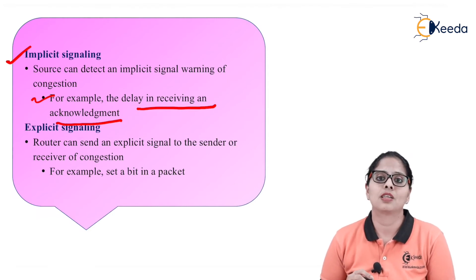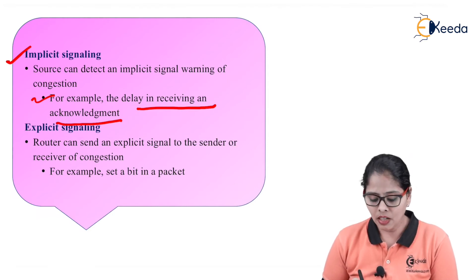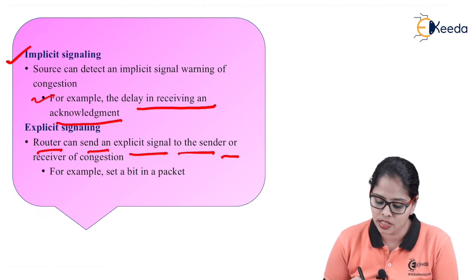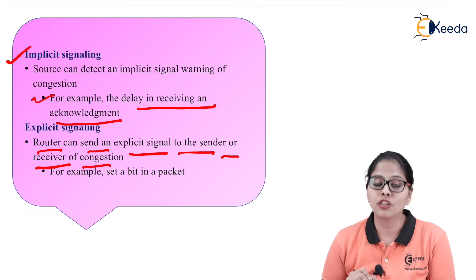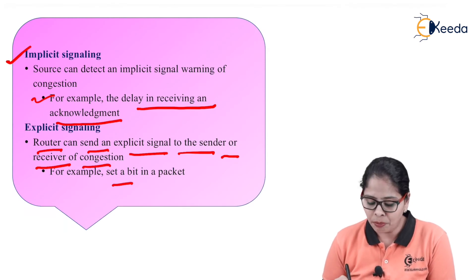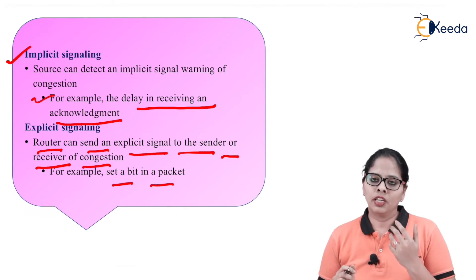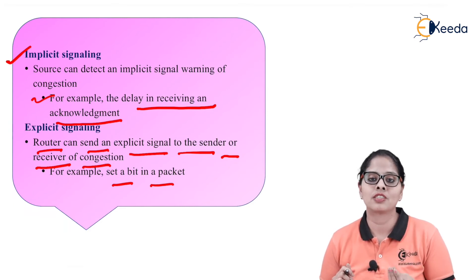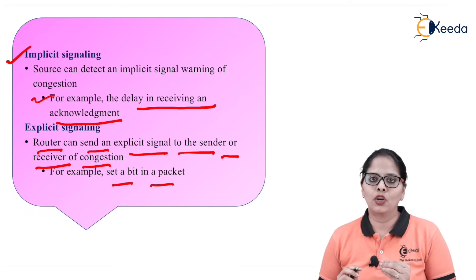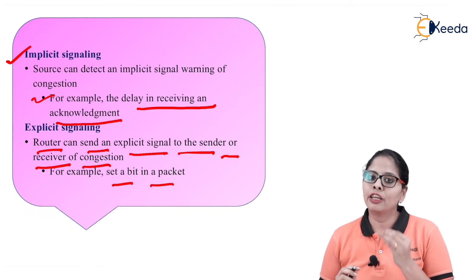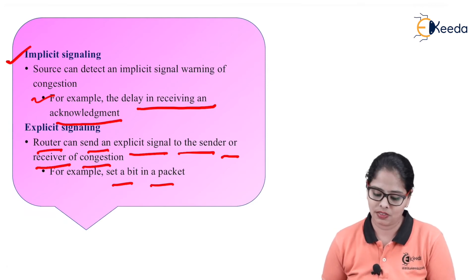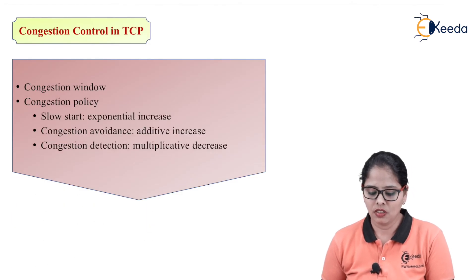Next is implicit signaling: the source can detect an implicit signal warning of congestion. For example, by observing a delay in receiving the acknowledgement — whenever the sender understands it didn't get acknowledgement immediately, there is congestion in the network. That is called implicit signaling. For explicit signaling, the router can send an explicit signal to the sender or receiver by setting a control bit in the packet to inform them that congestion has occurred.